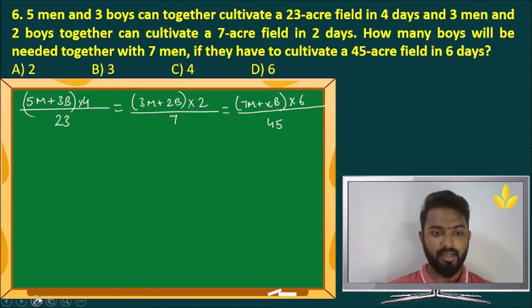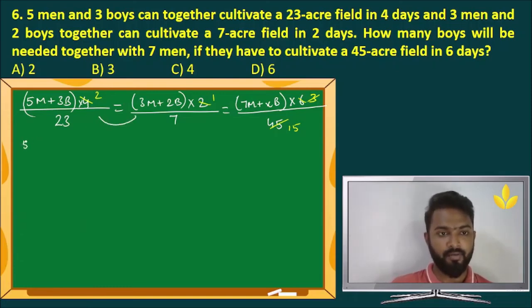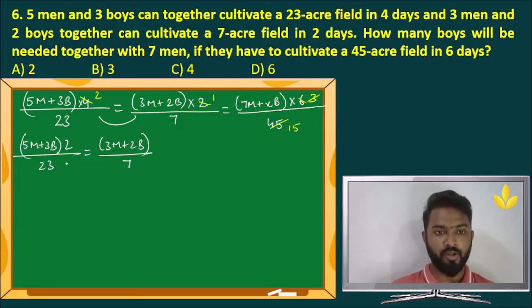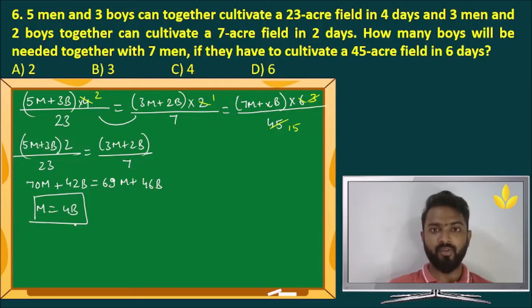Now again we have to use the same thing, but let us simplify this here itself a little bit. 4, 2 and 6 all of them are divisible by 2. So 2 2s are 4, 2 1s are 2, 2 3s are 6 and then these two also 3 15s are 45. Now we know that the first thing we have to do is we need to equate these two. We have 5 M plus 3 B into 2 by 23 equals 3 M plus 2 B divided by 7. Now let us cross multiply, 5 2s are 10, 10 7s are 70 M plus 3 2s are 6, 6 7s are 42 B equals 23 into 3 is 69 M plus 23 into 2 is 46 B. 70 minus 69 is 1 M equals 46 minus 42 is 4 B. This is the thing. One man's efficiency equals 4 boy's efficiency.